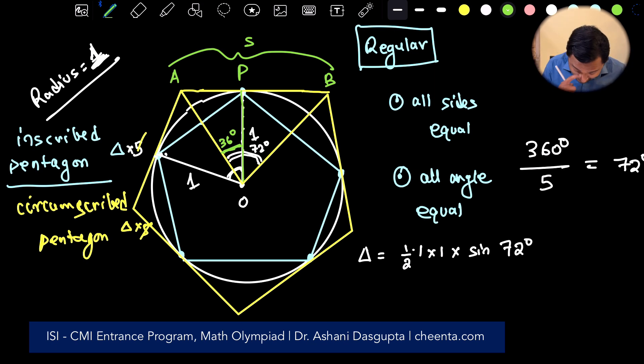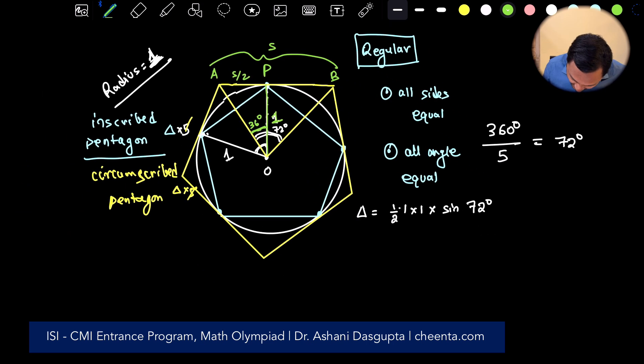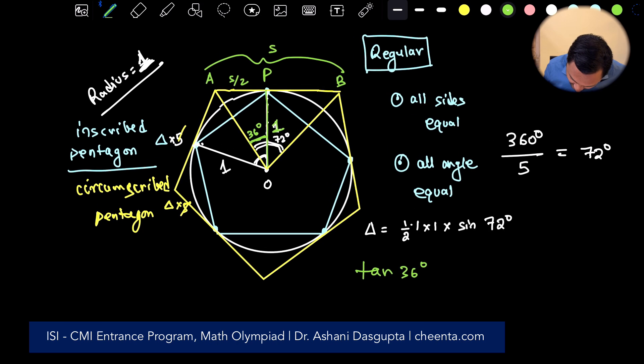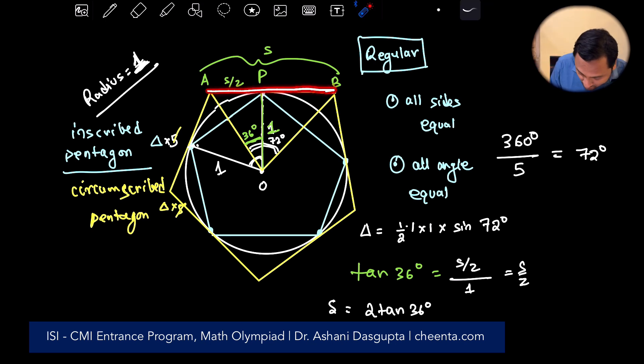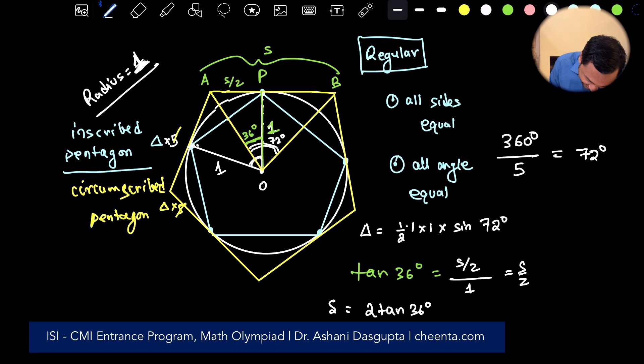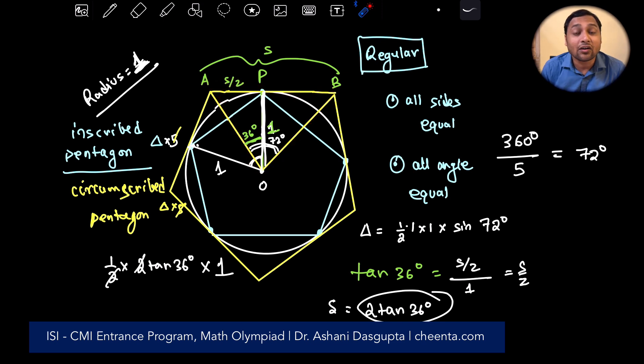Okay, so if that is the case, then this is S by 2, and this is 1, OP is 1, then tan of 36 degree is S by 2 divided by 1. So, this is S by 2. So the side length is 2 times tan 36 degree. Right? Side length means this one. So what is the area of this triangle? The area is half, side length is 2 times tan 36, times the height. Height is 1. 2, 2 cancels. So we have tan 36 degree. So area of this big triangle is simply tan of 36 degree.